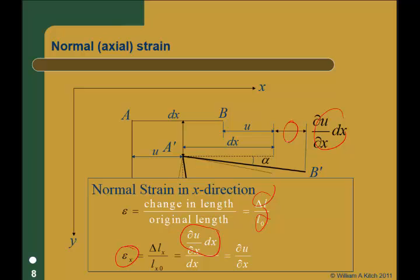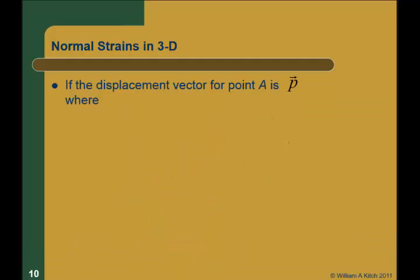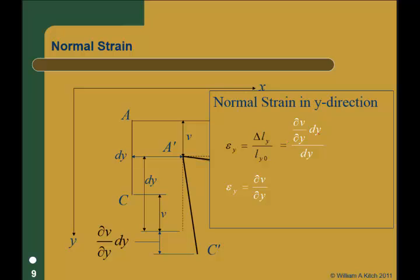You've got a bunch of calculus theorems to justify that, but that's why I became an engineer — I could cancel the two dx's and get the right answer. We can do the same thing in the y direction: the change in length is the partial of v with respect to y times dy, the original length was dy, so the normal strain in the y direction is just the partial of v with respect to y.